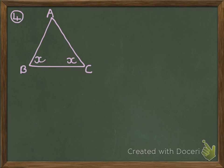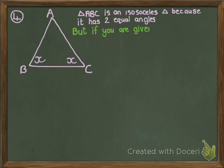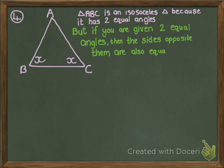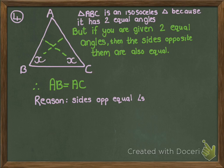Now the fourth reason. Triangle ABC is an isosceles triangle because it has two equal angles — angle B and angle C are both labeled X. If you are given two angles equal to each other, then the sides opposite these equal angles are also equal to each other. Opposite X is AC and opposite X is AB, so AB and AC must be equal. The reason is: sides opposite equal angles. It's easy to confuse angles opposite equal sides with sides opposite equal angles, so be careful.